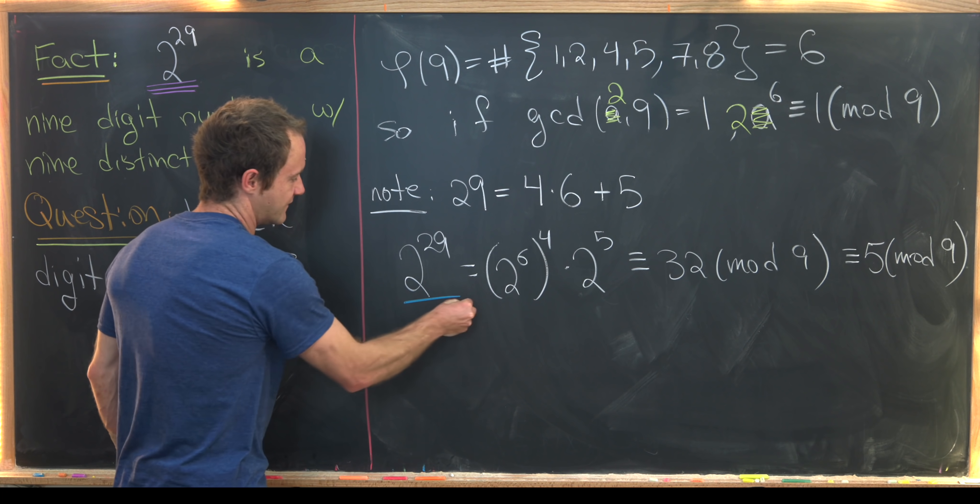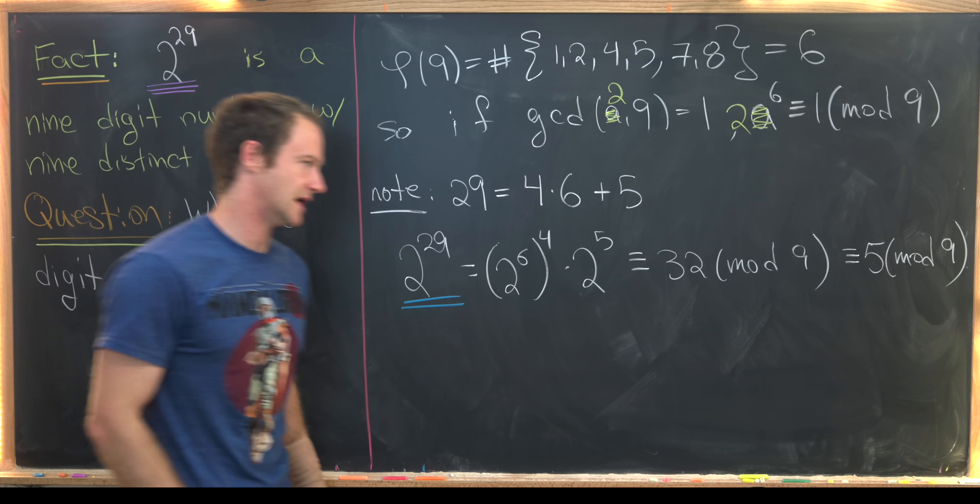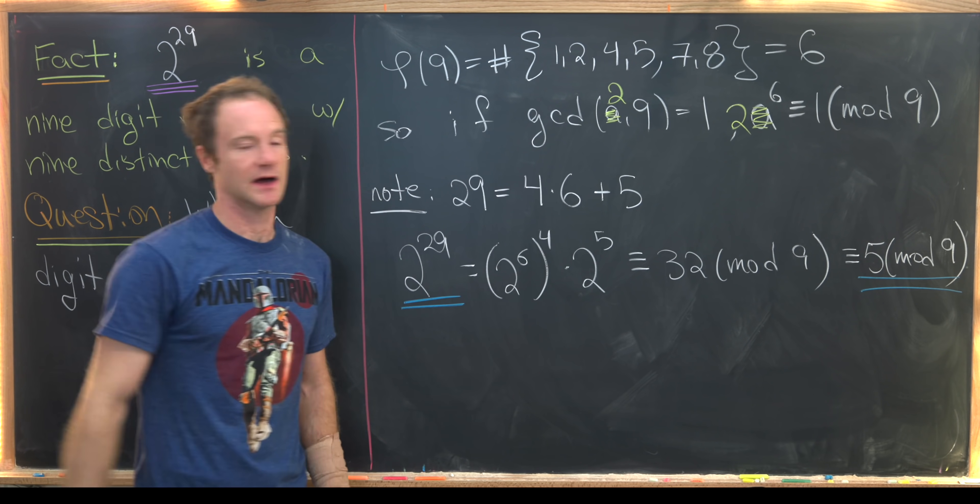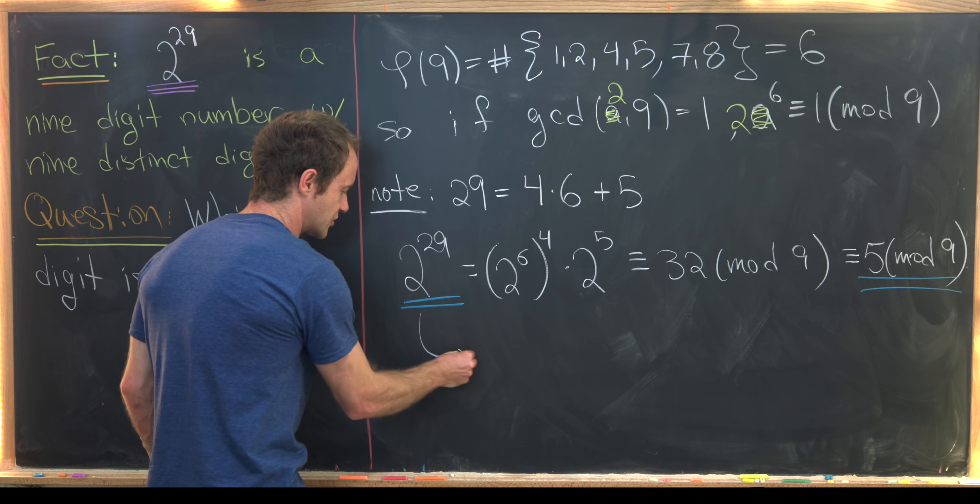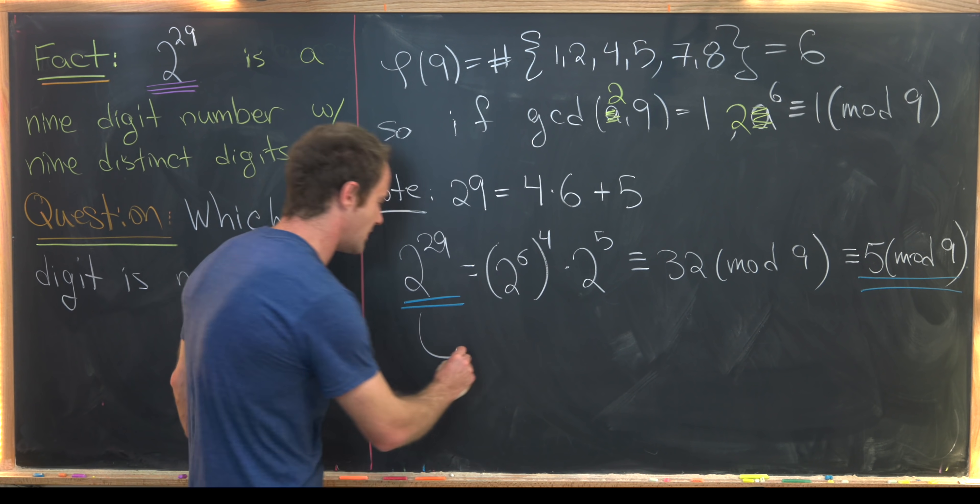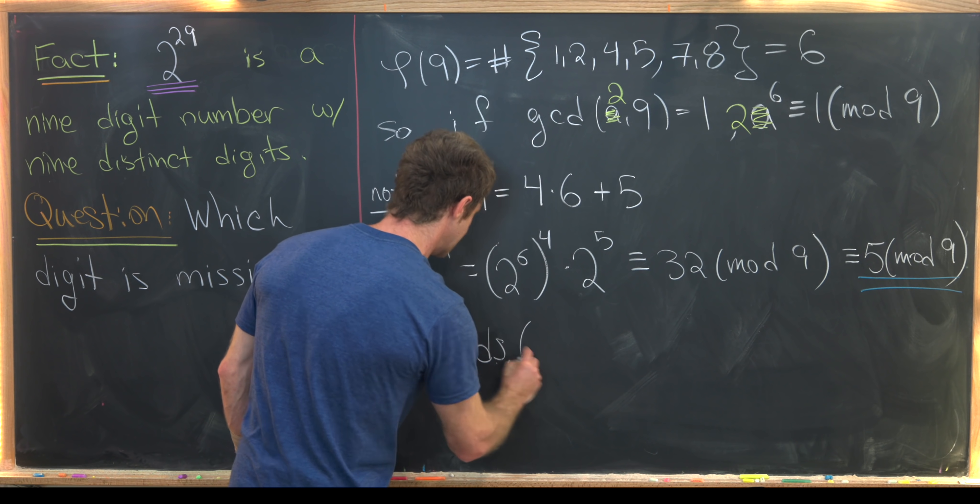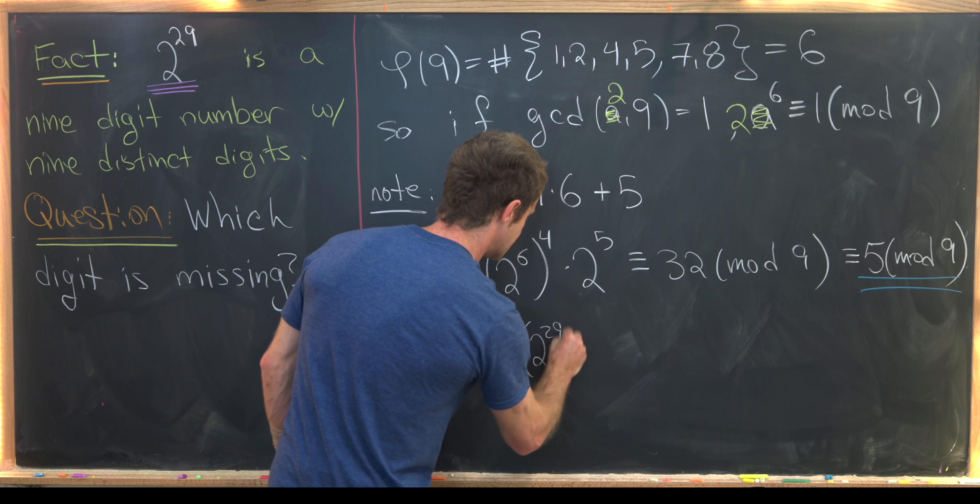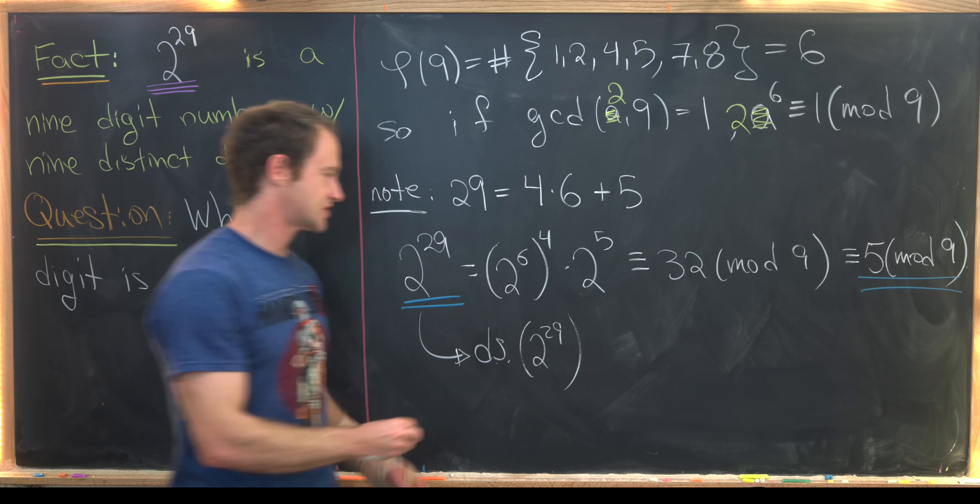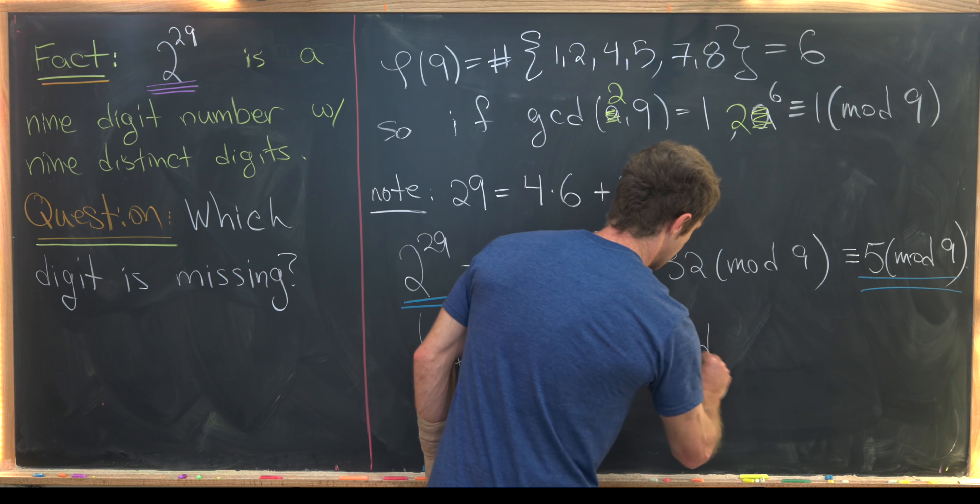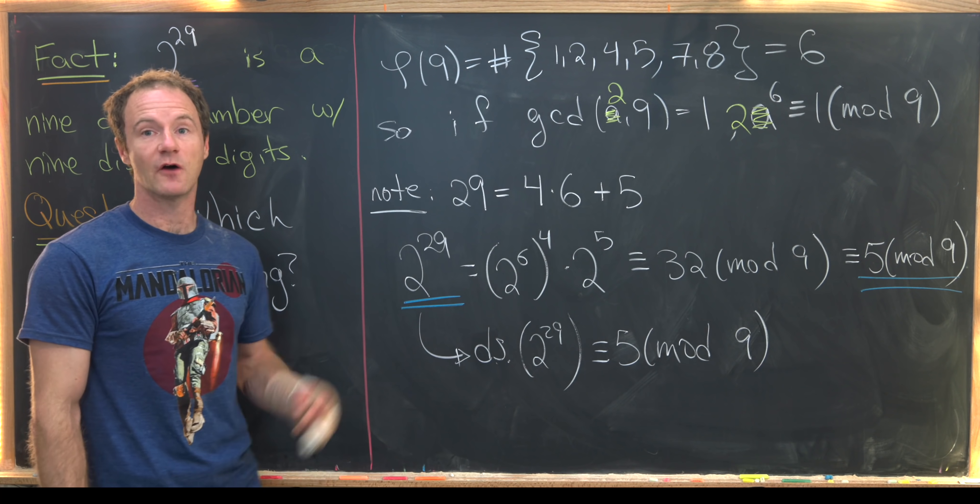So just to reiterate what we've got so far, we've got two to the 29 is congruent to five mod nine. But then by our other tool, we know the sum of the digits—so I'll just put maybe d s for the digit sum—of two to the 29 is also going to be congruent to five modulo nine.